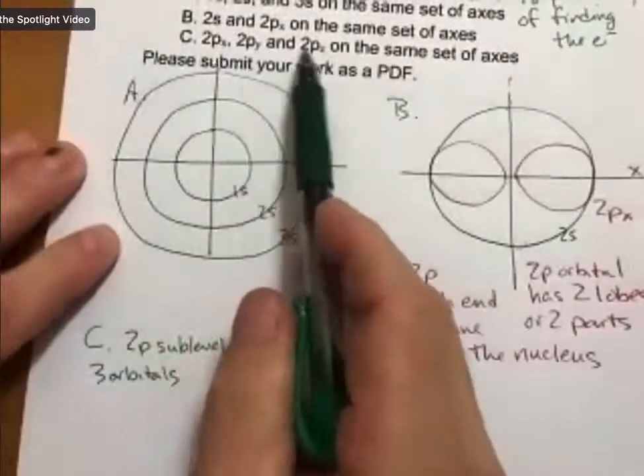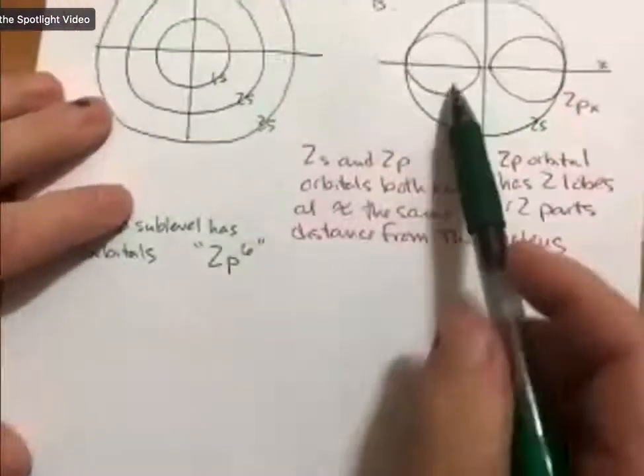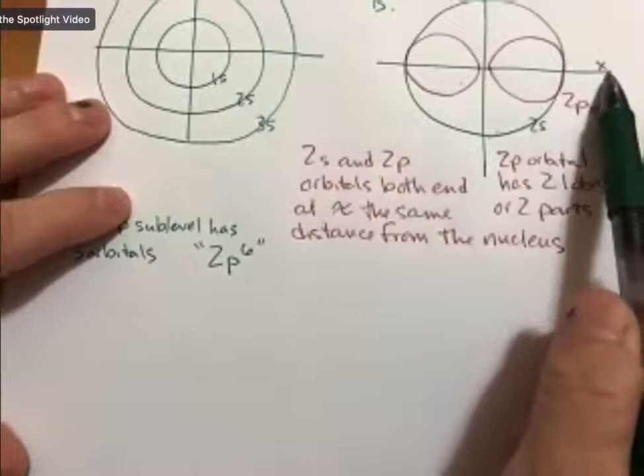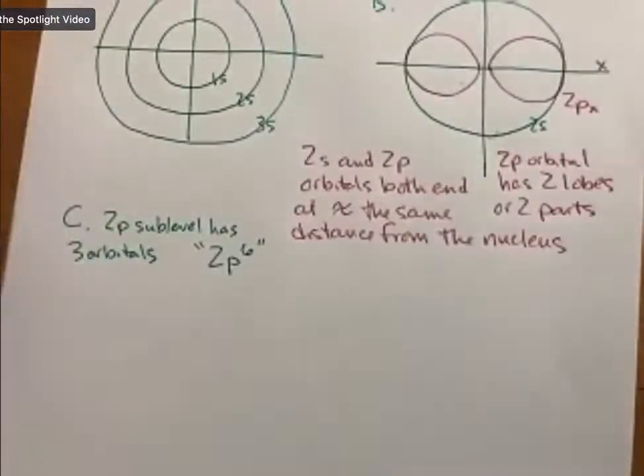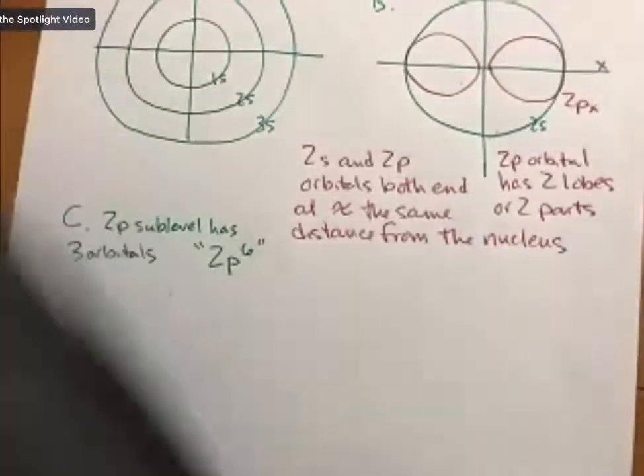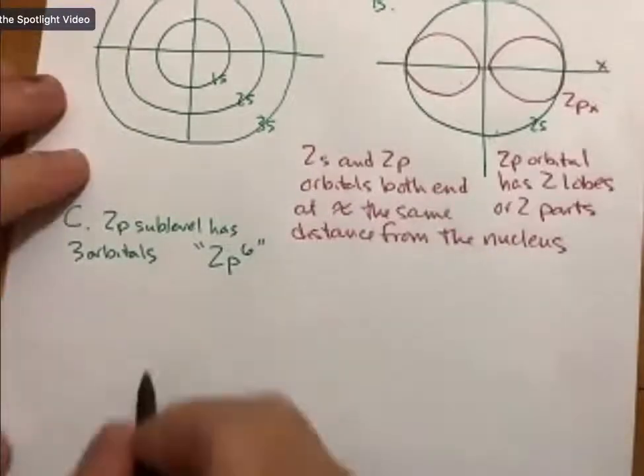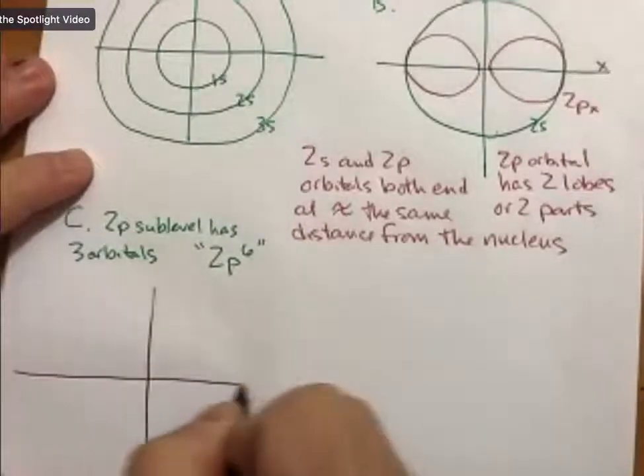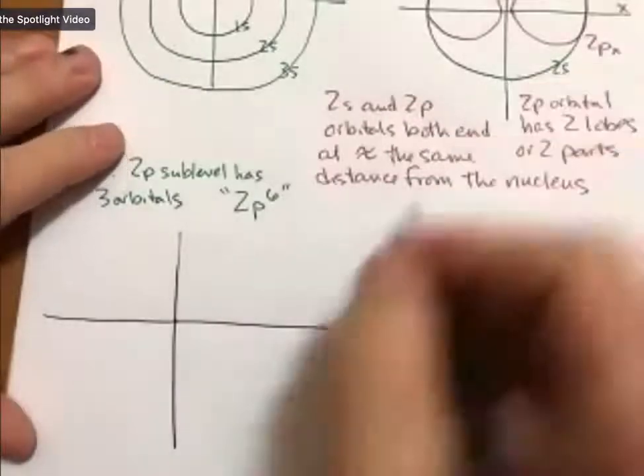So 2Px, 2Py, and 2Pz are going to be shapes just like this along each of their respective axes. So I'll draw them actually in I think three different colors. Do I have—no, I only have three colors. I thought I might even have four colors here, but let's see.